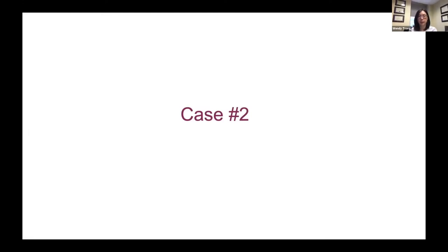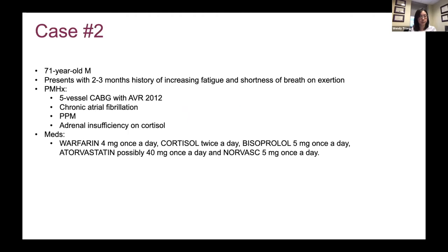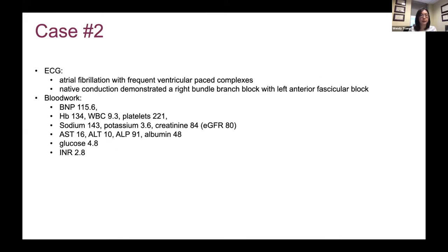Now moving to case number 2 — a 71-year-old gentleman with a 2-3 month history of increasing fatigue and shortness of breath on exertion. He had past history of bypass surgery with aortic valve replacement in 2012. He also has chronic atrial fibrillation with a pacemaker and adrenal insufficiency on cortisone. His ECG shows atrial fibrillation. His BNP is a little bit above the cutoff of 100, but not meeting criteria for heart failure over 500. Hemoglobin is slightly low; electrolytes, creatinine, and liver function tests are normal; INR is slightly elevated on warfarin.